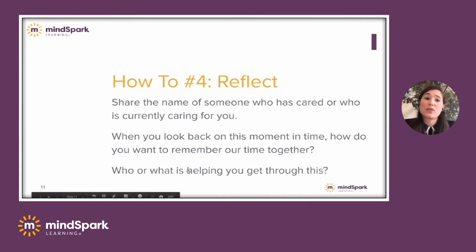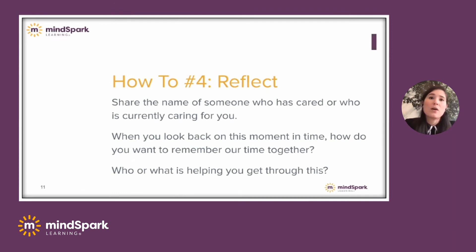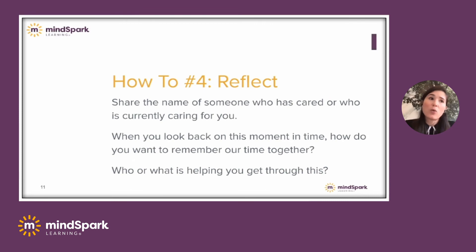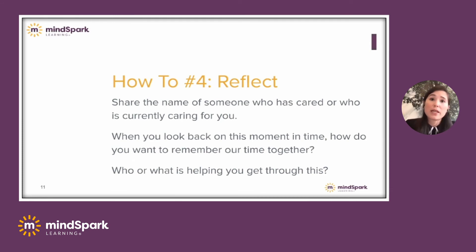How-to number four is to reflect. We're all operating at 100 miles an hour right now, and it can be really difficult and stressful and overwhelming. But it's critically important that we take the time both individually and collectively with our adult learners to reflect. You can ask questions like: "We're operating at a breakneck speed — what are we perhaps overlooking? What are some of our blind spots? Whose voices might we be missing right now?"